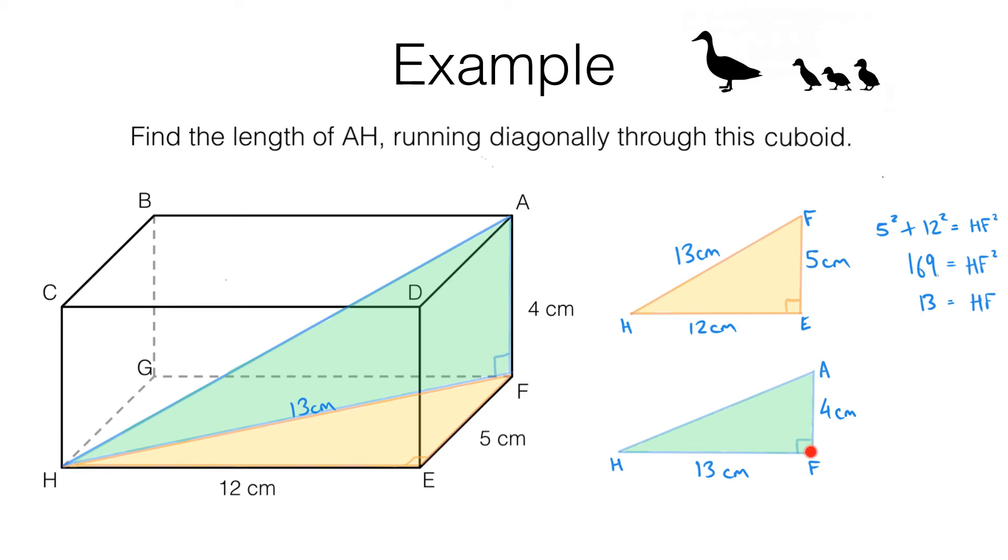We know 4 squared plus 13 squared will give us AH squared. The left-hand side of this equation works out to 16 plus 169, which is 185. So AH squared is 185. And that means AH equals the square root of 185. Now that's not something we'd be expected to calculate in our heads. But using a calculator, we find AH equals the square root of 185, which is 13.6 to the nearest 0.1 centimetre. So our length here is 13.6 centimetres.